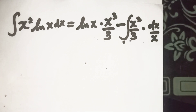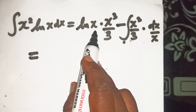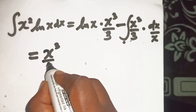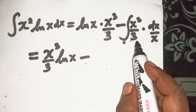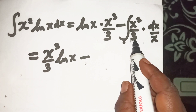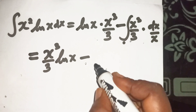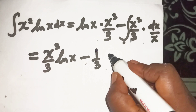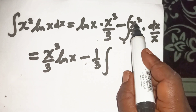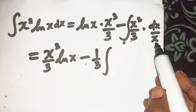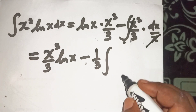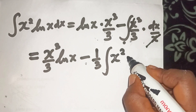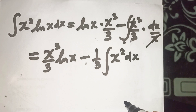At this point, multiplying these terms, we will have x³/3·ln(x) minus 1/3 times the integral of x³/x dx. We can cancel one x from the numerator with x on the denominator to have x² dx. So this gives us x³/3·ln(x) minus 1/3 times the integral of x² dx.